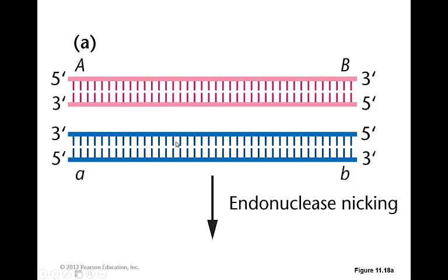So to begin with, what's going to happen, we've got a chromosome from mom and a chromosome from dad, is that we're going to get little nicks in the DNA.